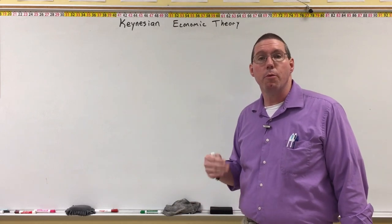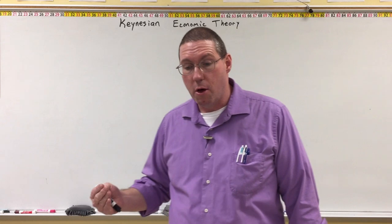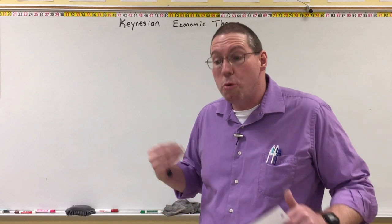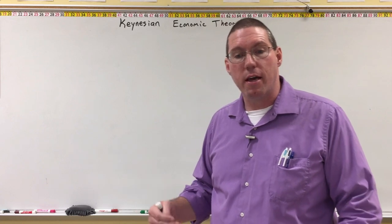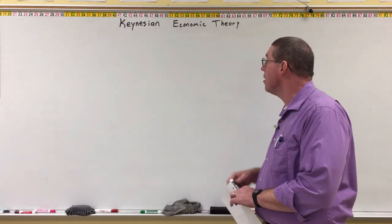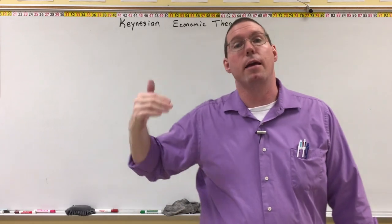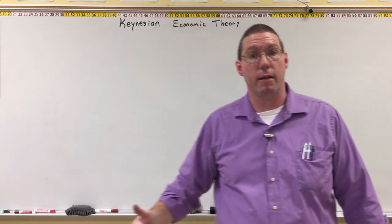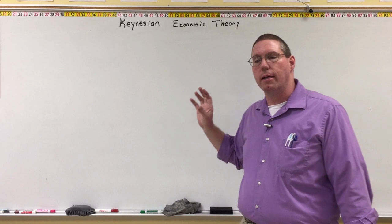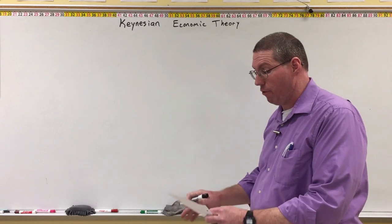John Maynard Keynes was an economist who had the idea that sometimes, especially in cases of a recessionary gap, the government does need to intervene. The government has to do something to increase demand so that the economy can come out of a recessionary gap. Keynesian economic theory is in a way a competitor to classical economic theory, but it's better thought of as a solution to a problem that couldn't be solved by classical economic theory in the first half of the 20th century.